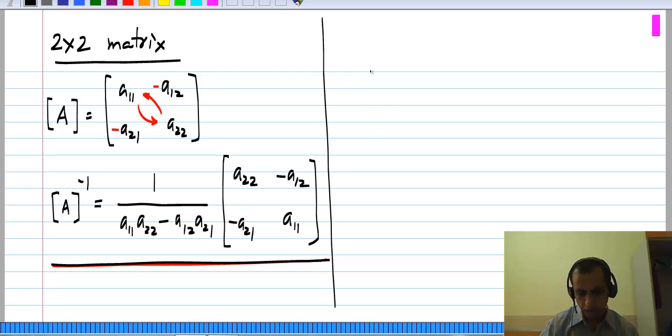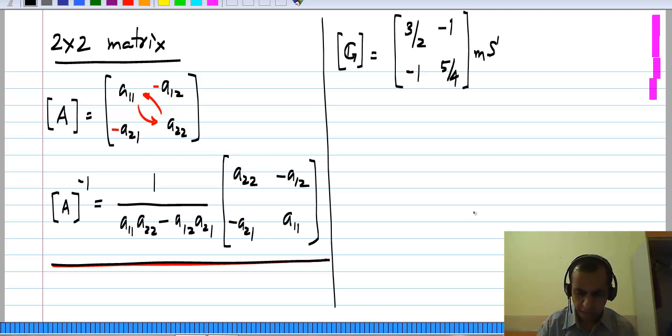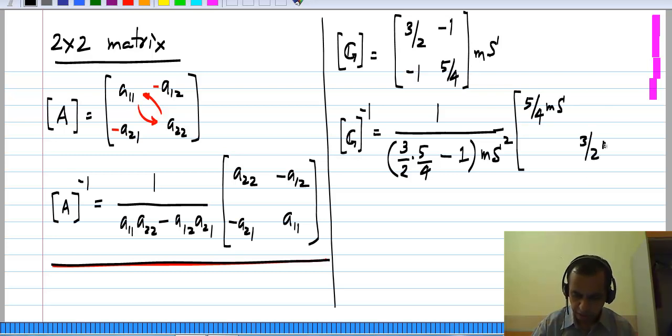So now you can go back to the example we had earlier which was, we had a G matrix which was 3/2, -1, -1, 5/4 millisiemens. So the inverse of this is 1 by the product of these two which is 3/2 times 5/4 and each of them is millisiemens. So the unit of this is millisiemens squared minus the product of these two which is just 1 millisiemens squared. And I have to swap the diagonal elements, so I get 5/4 millisiemens over there, 3/2 millisiemens over there, and this -1 will become 1 millisiemens and the other -1 also becomes 1 millisiemens.